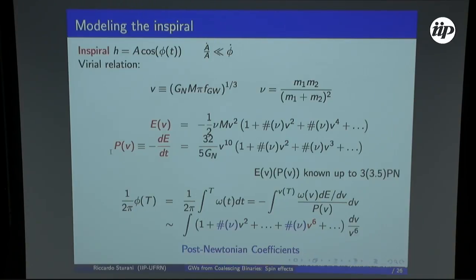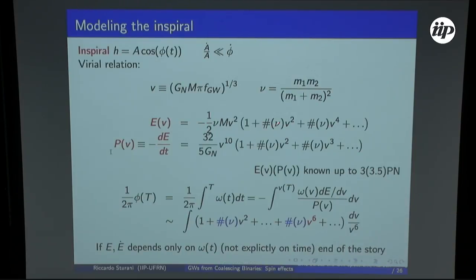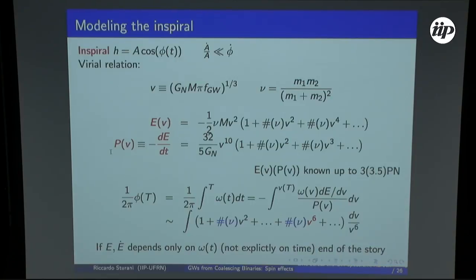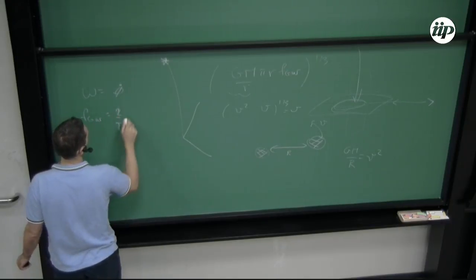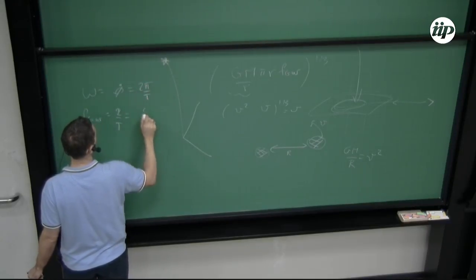So now finally: spin. I've gone halfway through my time without talking about spin. Where does spin enter this game? You see these coefficients just depend on the mass ratio if you don't have spin - they don't depend on time. If all these coefficients are constant, you can perform this integral analytically. But if the energy and the flux depend on time only through omega, through v, you can do this integration straight away. However, if these coefficients depend explicitly on time, you have to do something better.